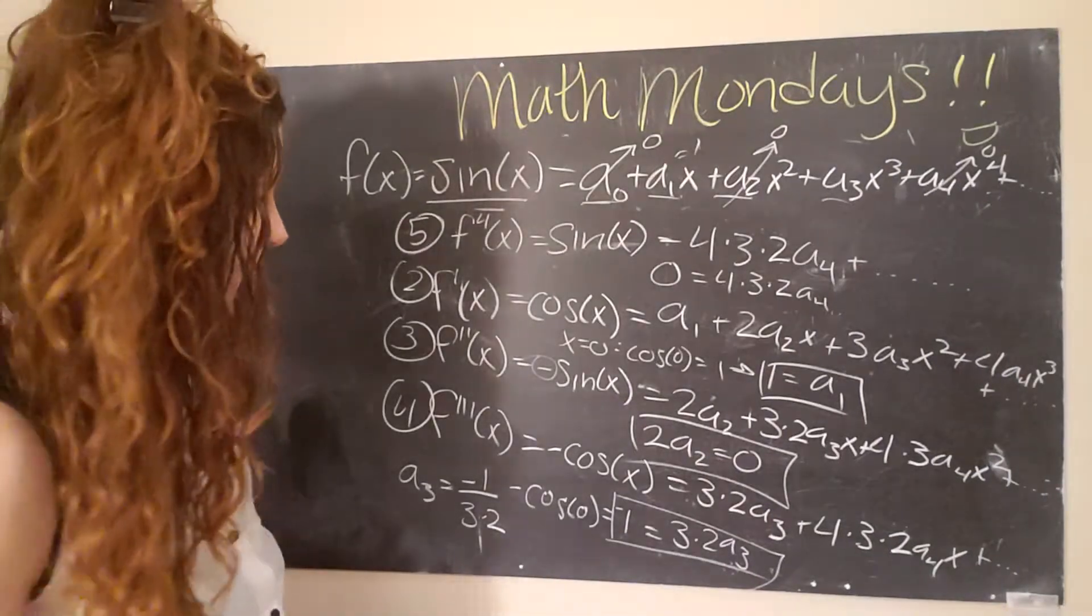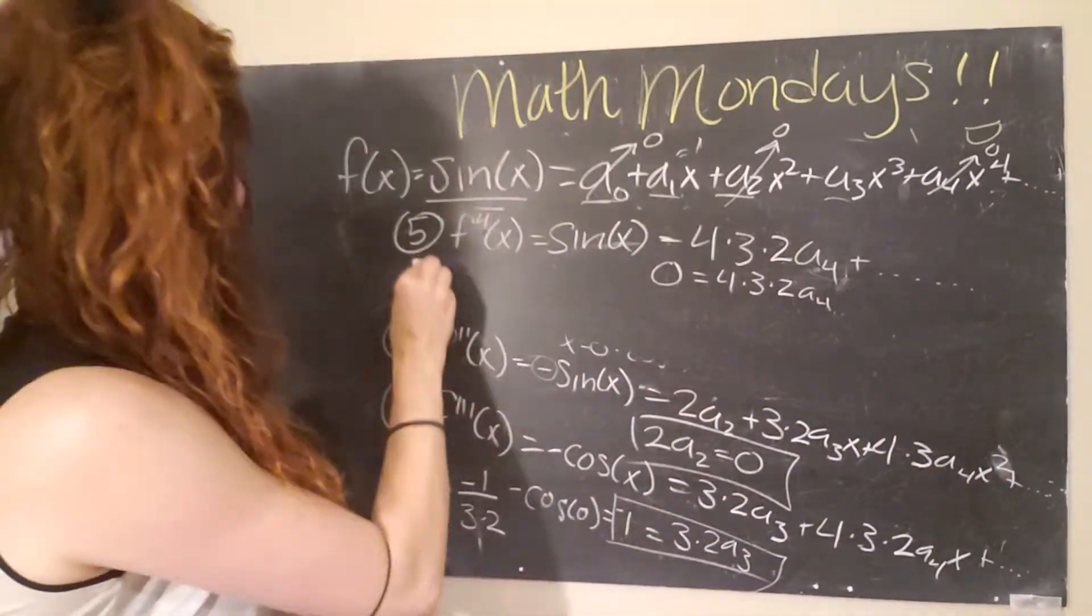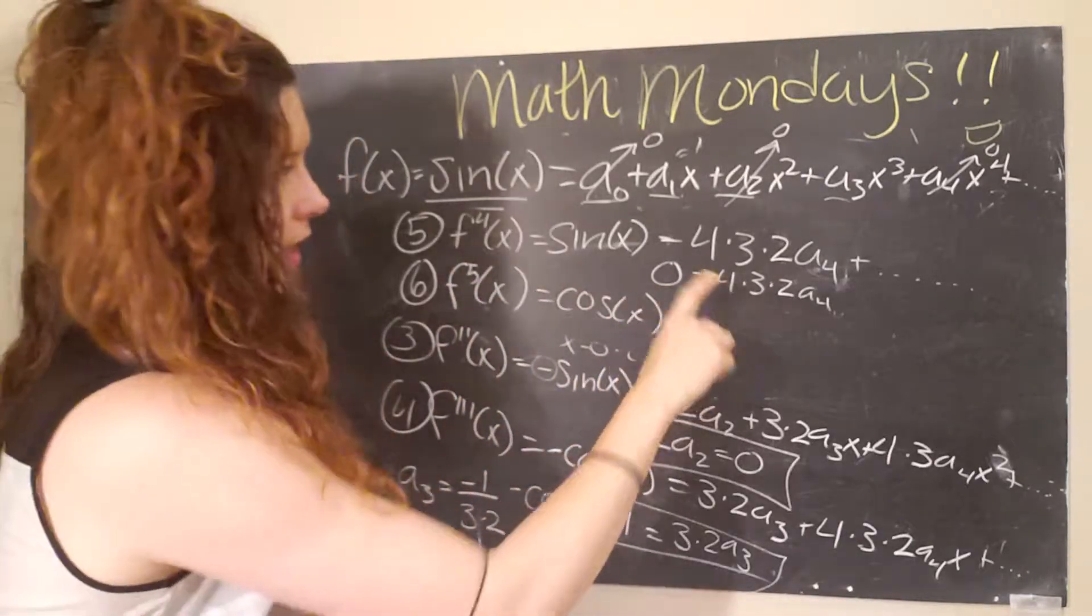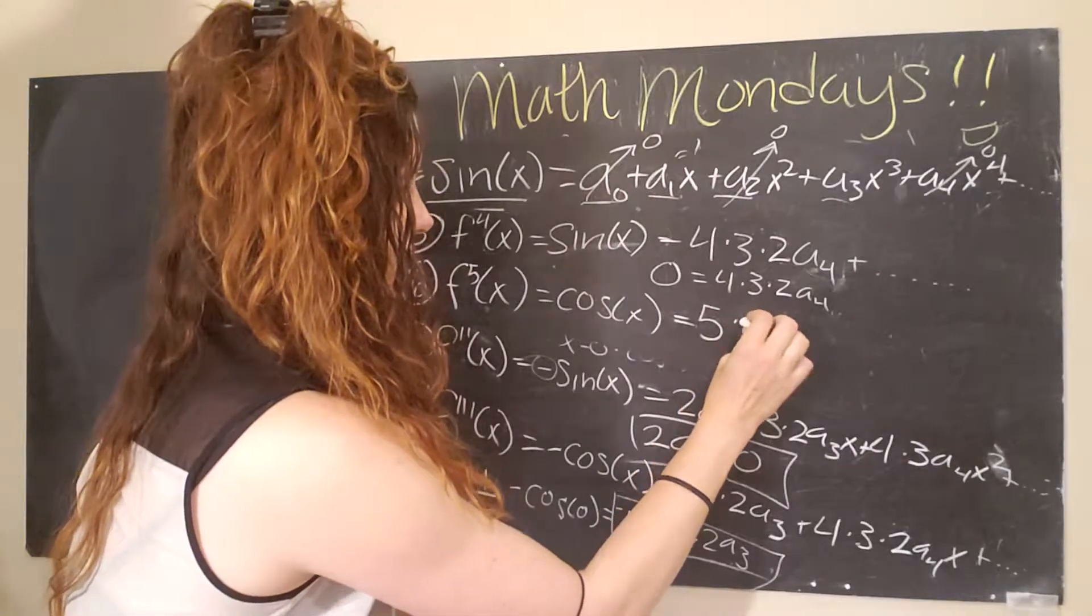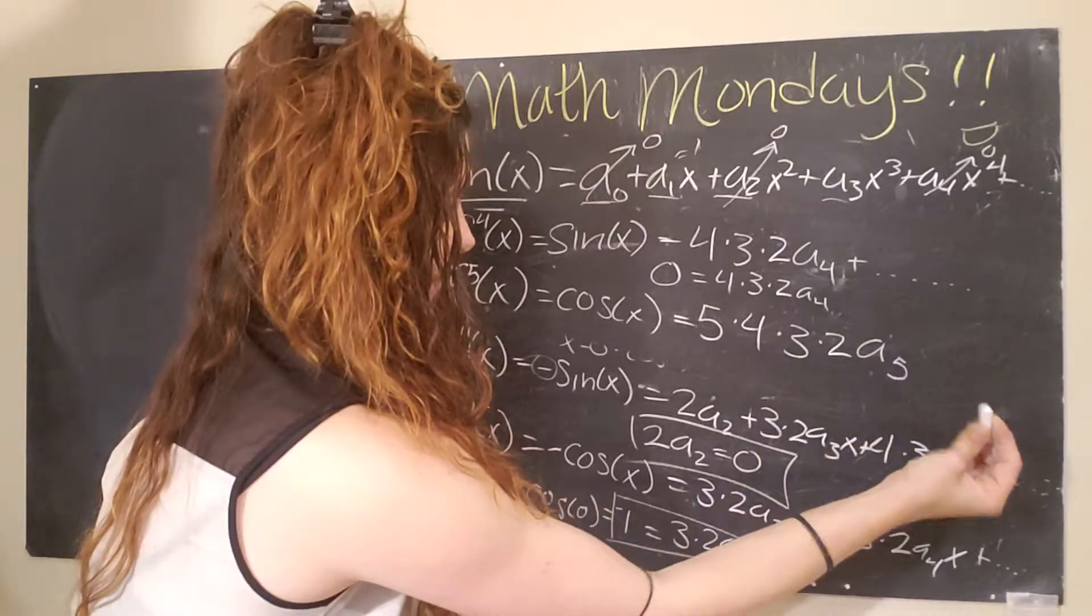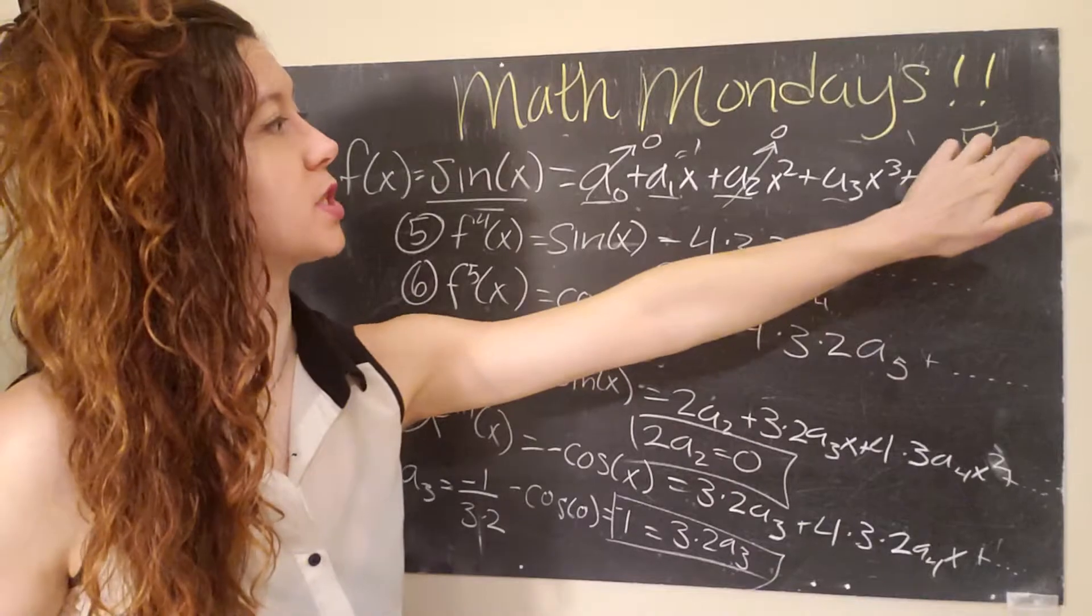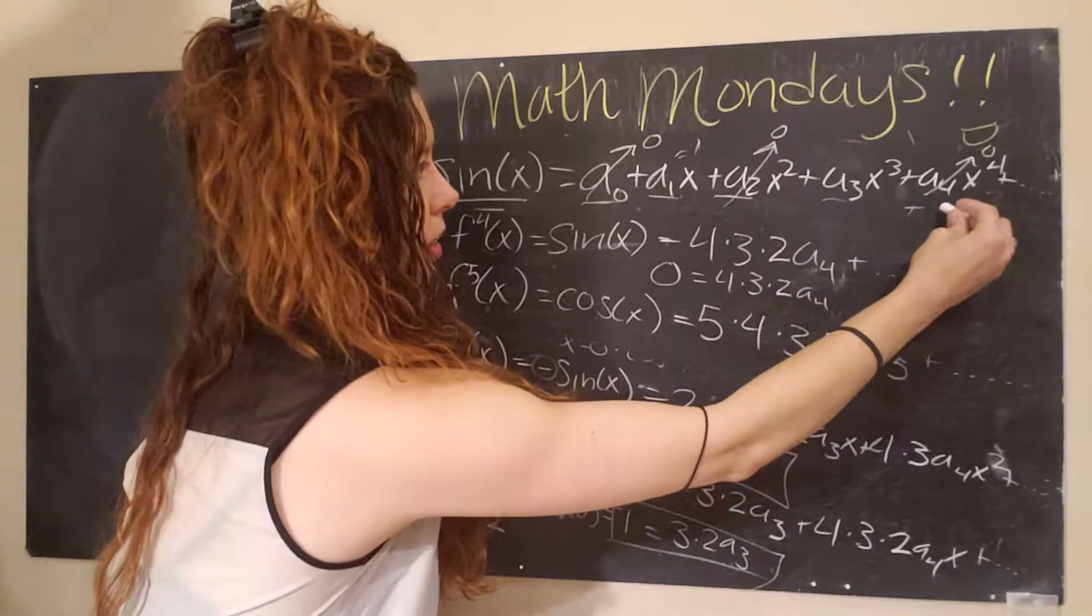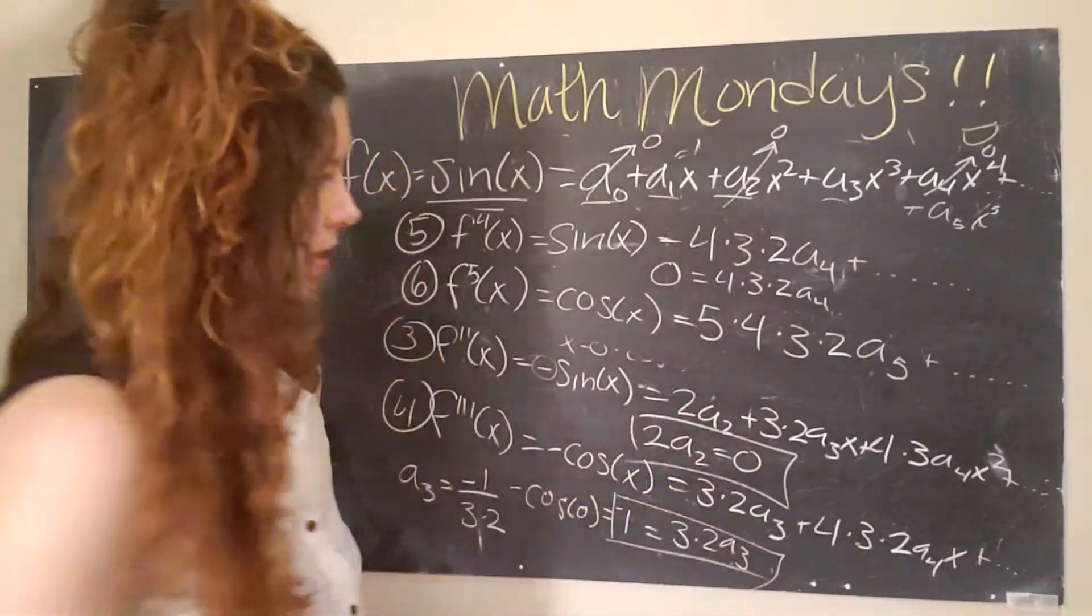And actually, if we were to do it one more time, what we would find is that the fifth derivative with respect to x is going to give us a cosine of x. And even though I didn't write it out, I've had to do this many a time and it's in textbooks and such. So what you get is five times four times three times two a five plus these are going to be terms with higher x. And remember a n subscript originally corresponds to the power of x that it is next to. So in this original equation, this would have been plus a five x to the fifth. So now this term, the fifth derivative later looks like this.